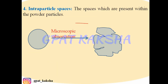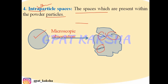Intraparticle spaces are the spaces present within the powder particles. If you observe a powder particle with the naked eye, it may appear smooth, but on microscopic observation, cracks and intraparticle spaces can be seen. Their dimensions may be up to 10 micrometers, and they can be observed using scanning electron microscopy.